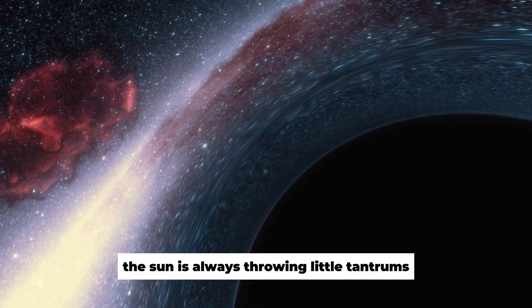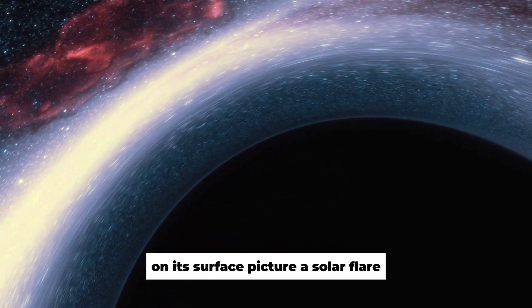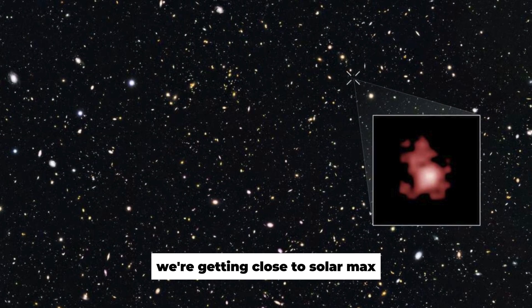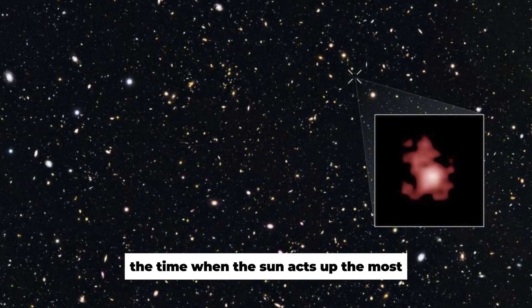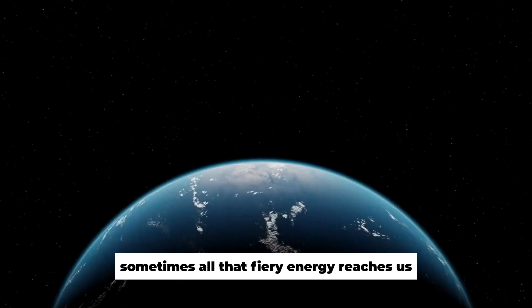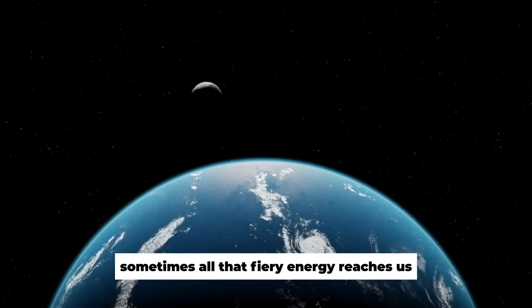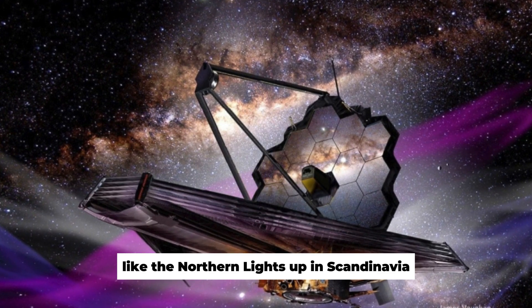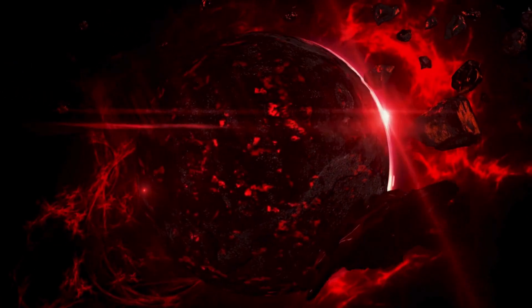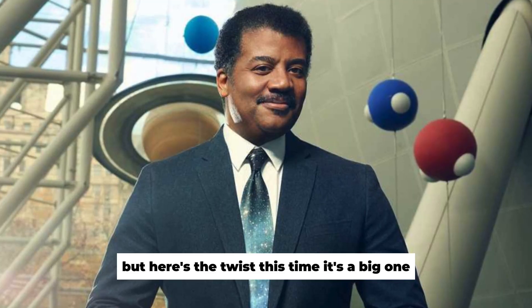The sun is always throwing little tantrums on its surface. Picture a solar flare like a burst of energy. Right now, we're getting close to solar max, the time when the sun acts up the most. It's like a pot about to boil over. Sometimes all that fiery energy reaches us, causing cool stuff like the northern lights up in Scandinavia. It's like the sun's sending us a light show. But here's the twist. This time, it's a big one.